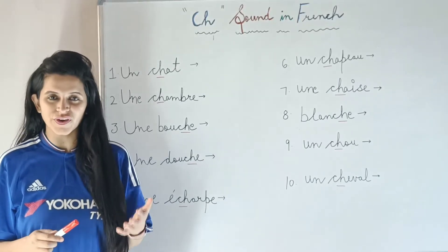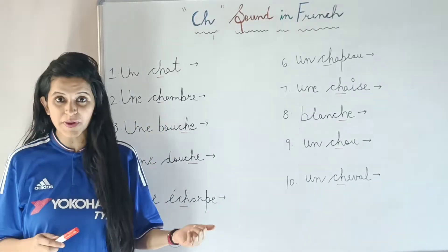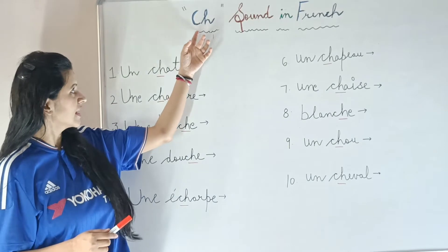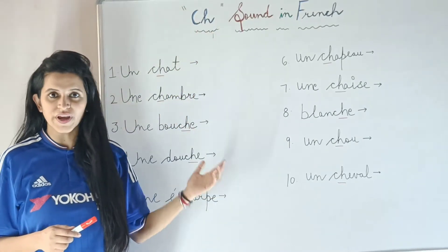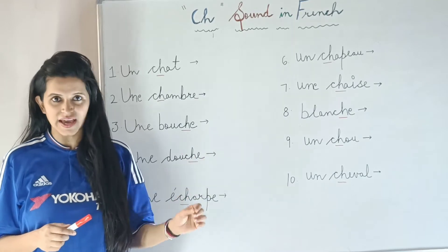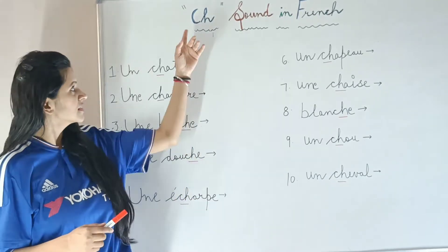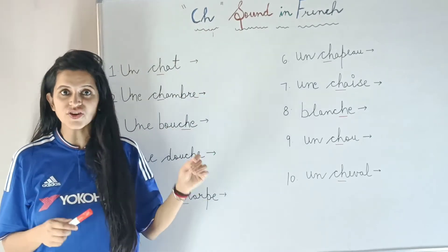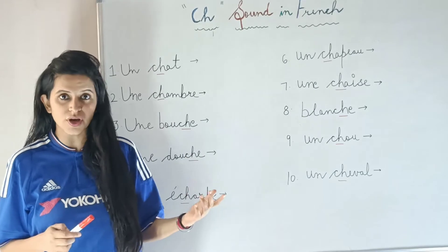In today's video, we are going to cover French phonetics and especially the words that have C-H in them. In French we pronounce C-H as 'Ache'. Whenever we have C-H in the words, the sound becomes 'Sh'.